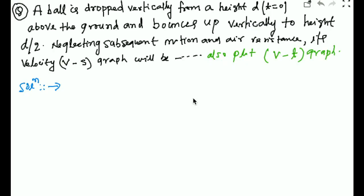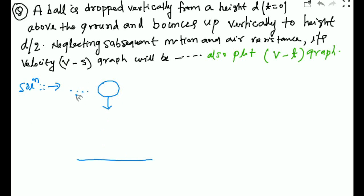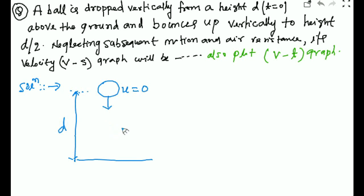A ball is dropped vertically from height d at t=0 above the ground and bounces up vertically to height d/2. Neglecting subsequent motion and air resistance, find and plot the velocity-displacement graph as well as the velocity-time graph. The ball is dropped from height d with initial velocity 0. After rebound, it will go to d/2.